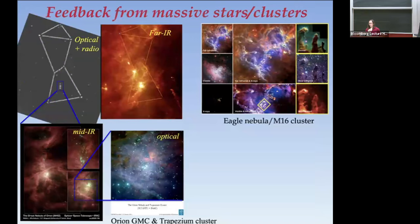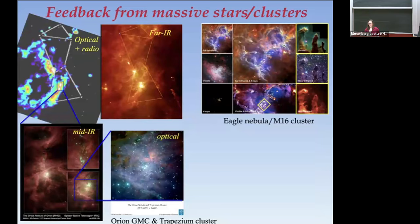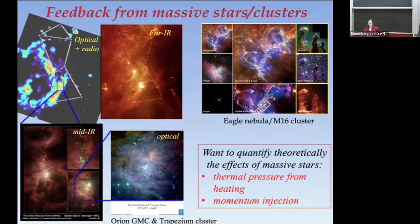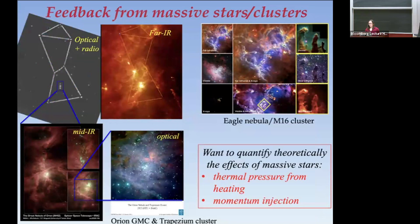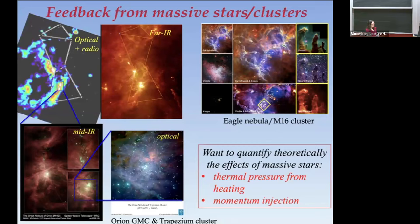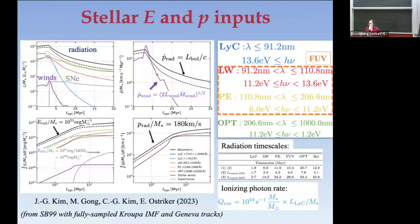Two especially important things we want to quantify are: what is the thermal pressure from heating, and what is the momentum injection? Both affect the birth cloud and also affect larger scales. Key is what the stars themselves provide. What I'm showing here is the energy and momentum inputs based on Starburst99 with a fully sampled Kroupa IMF and Geneva tracks.